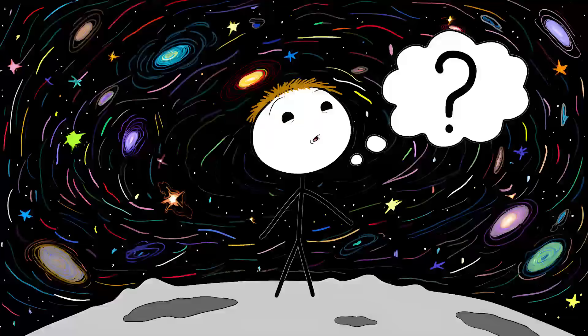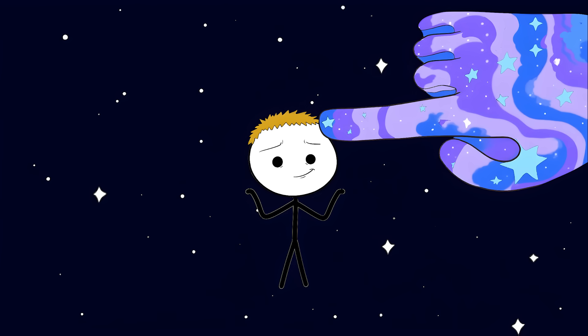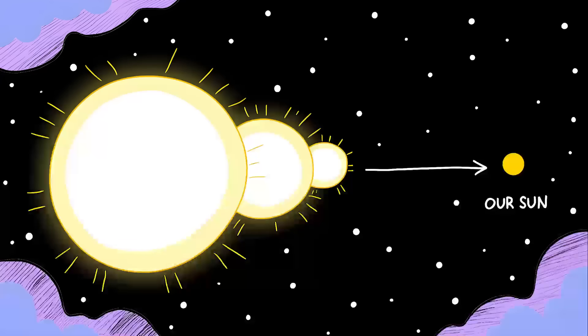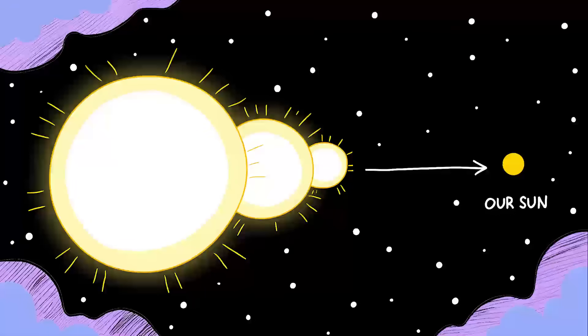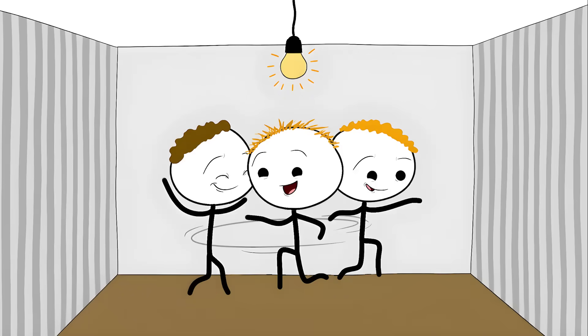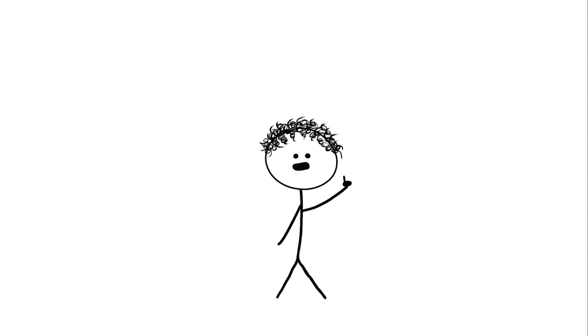Number one: the star with no business existing. There's this star system called HD 150136 that's basically defying physics. Picture three massive stars, each one way bigger than our sun, dancing around each other so close that our rules for gravity say they should have crashed into each other ages ago. The two closest stars in this system orbit each other every 2.67 days, closer to each other than Mercury is to the Sun.